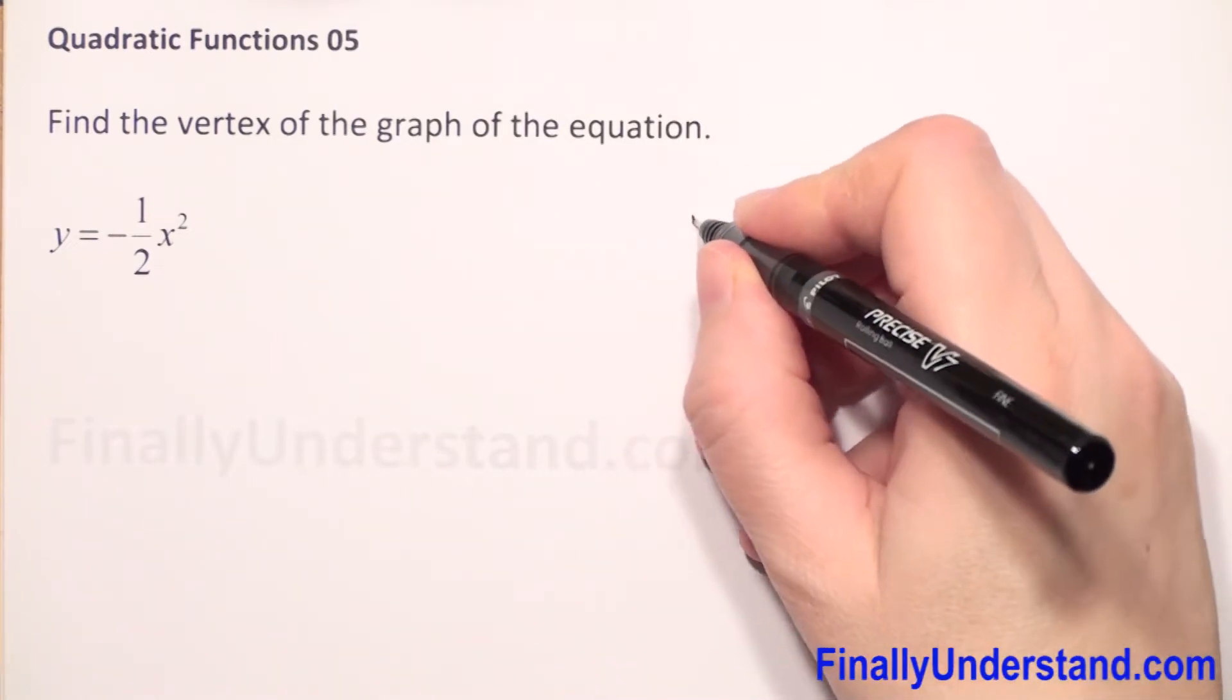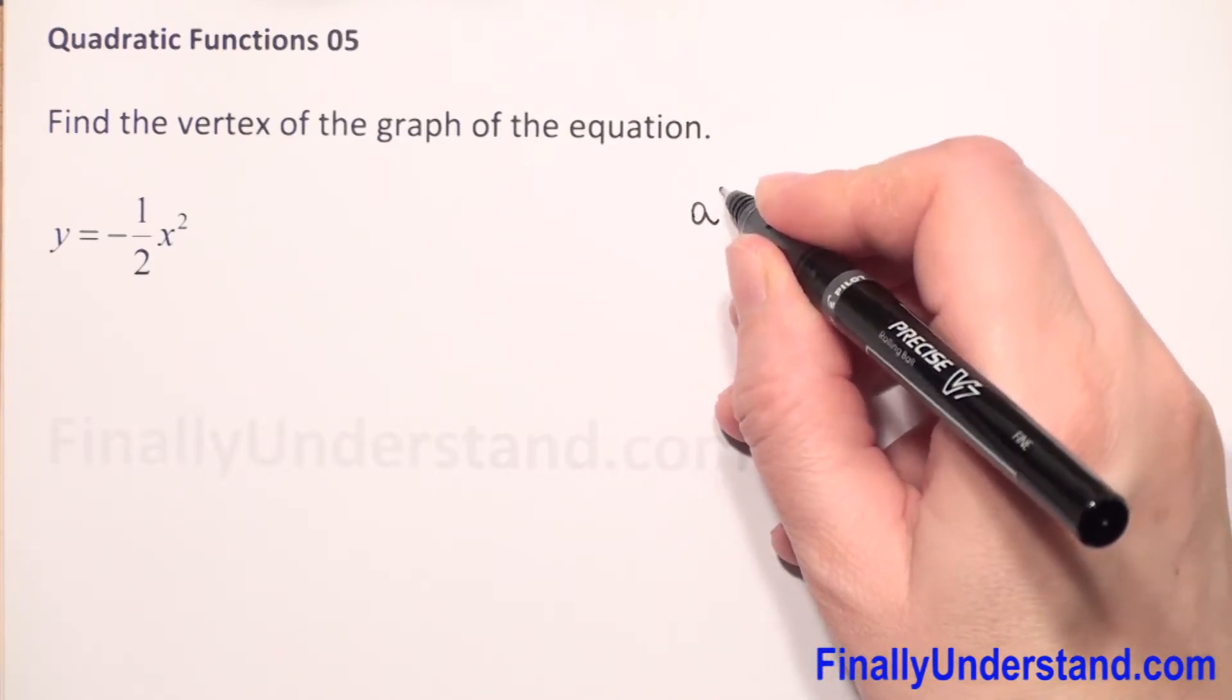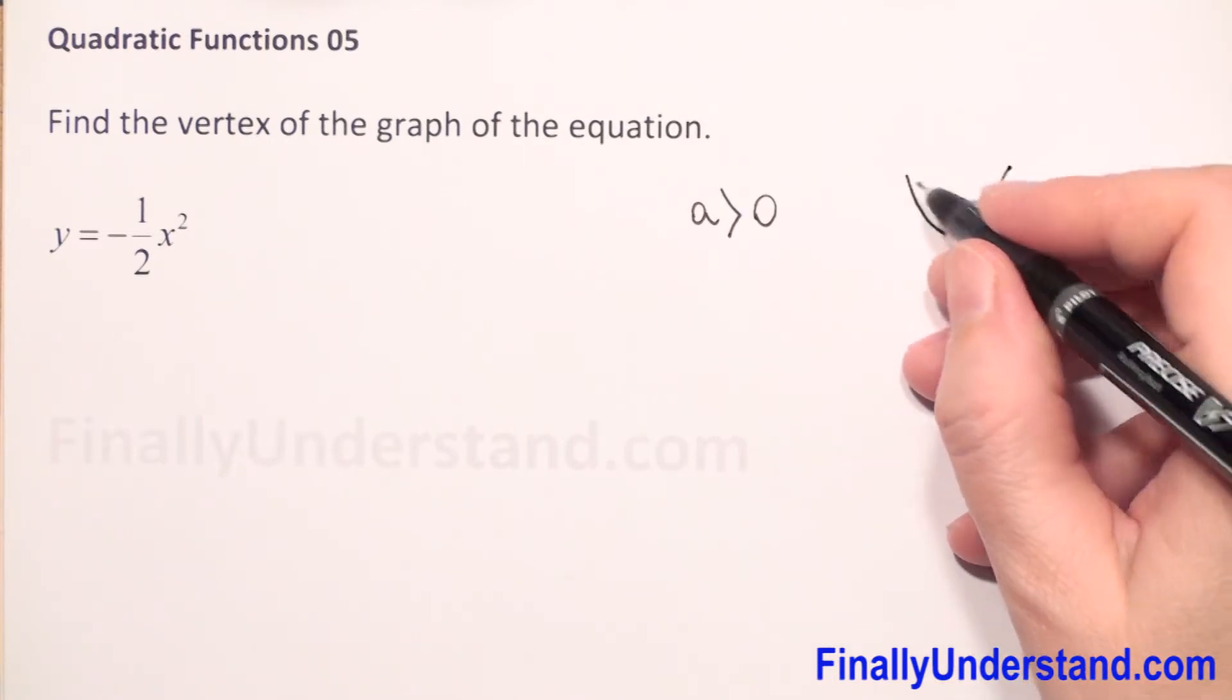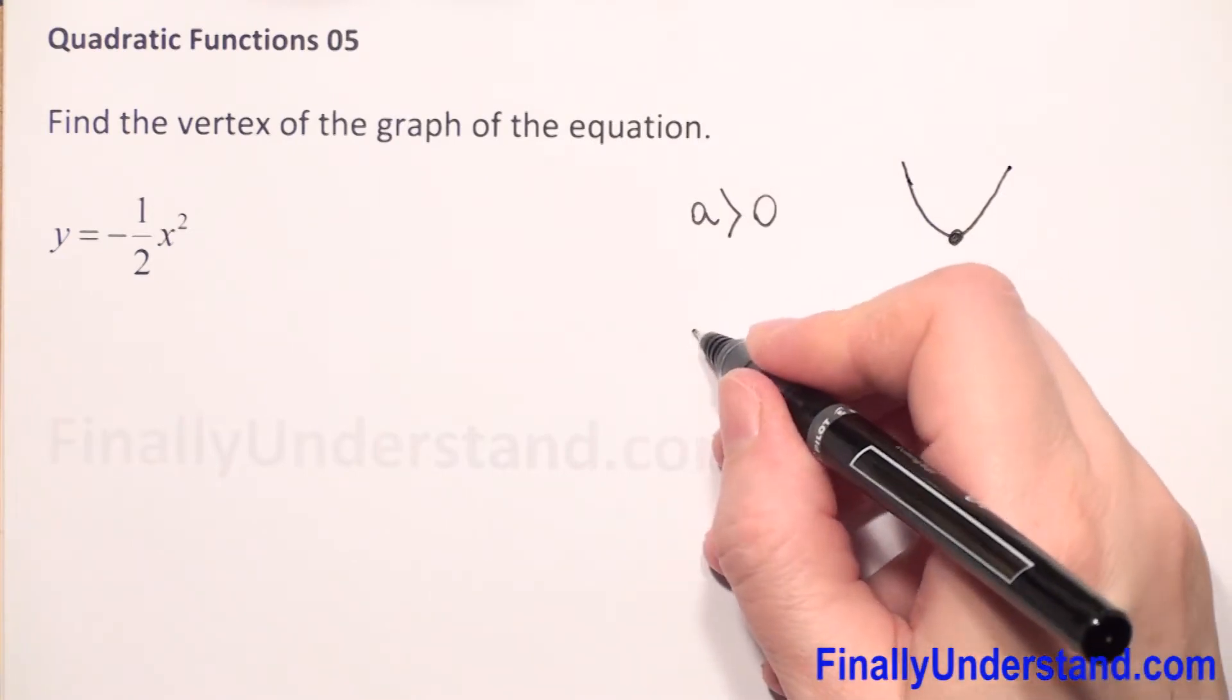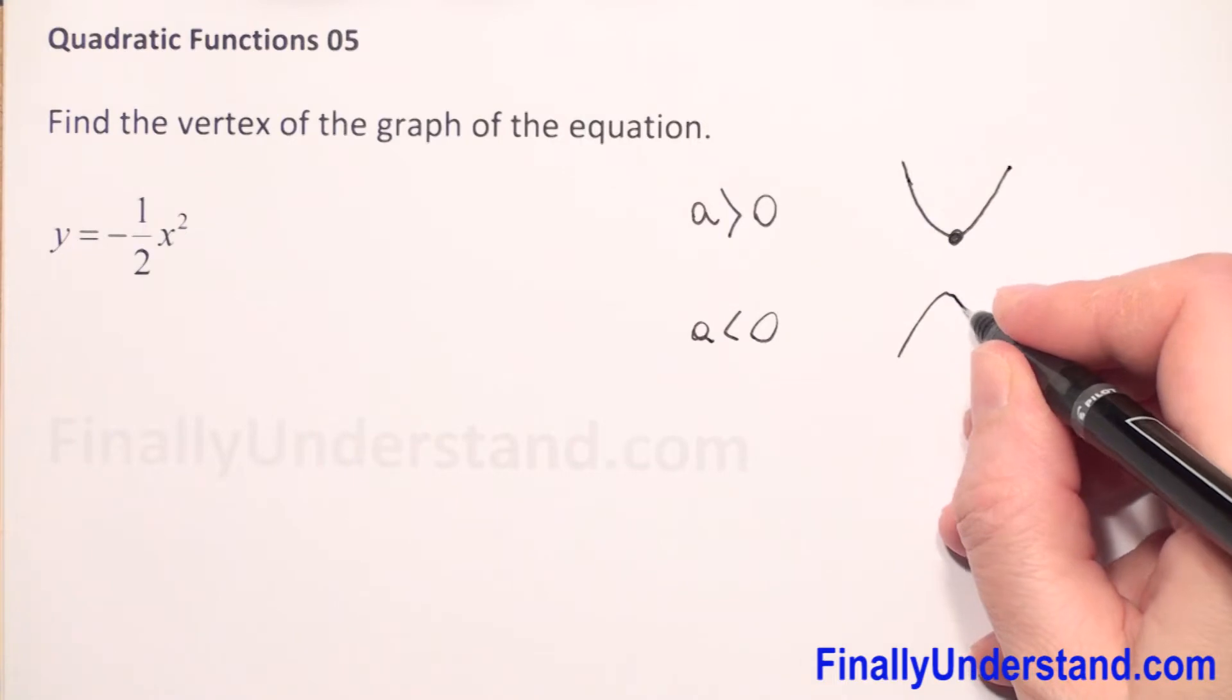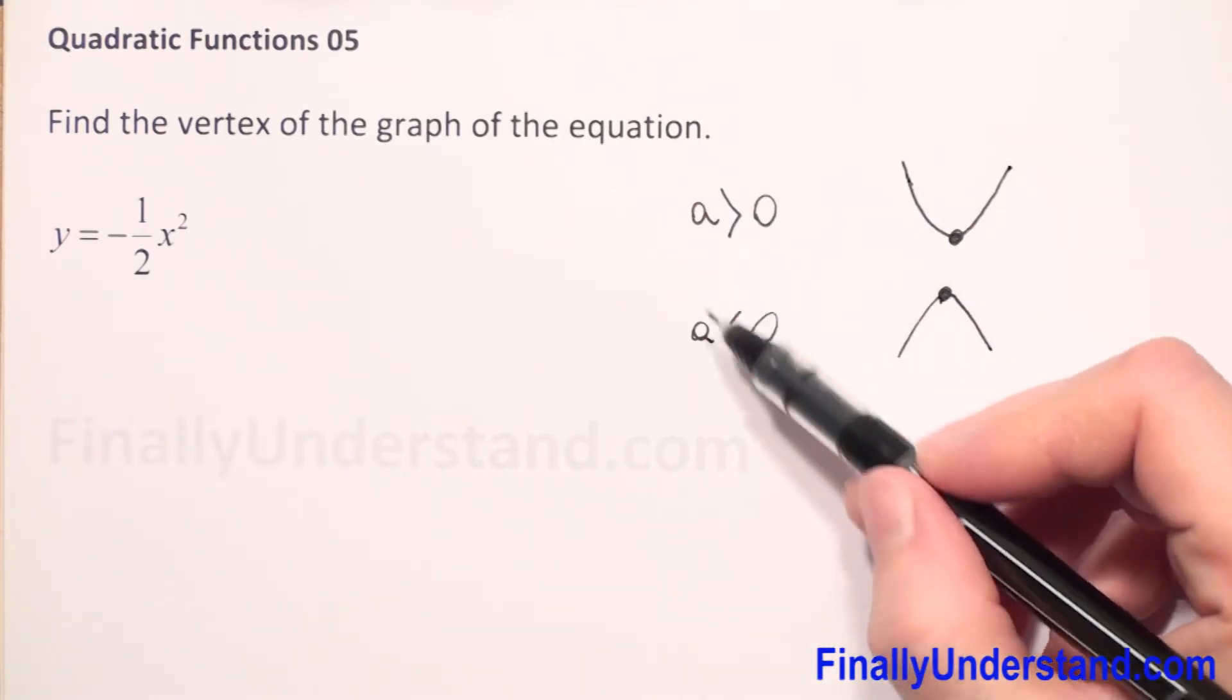Parabola can be opened up when a is greater than zero, we have parabola opens up and this is our vertex. When a is less than zero, parabola is open down, this is our vertex.